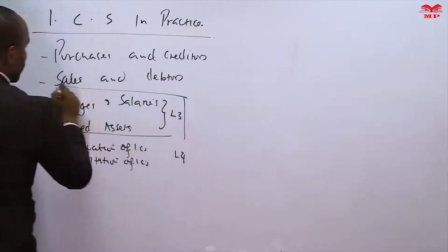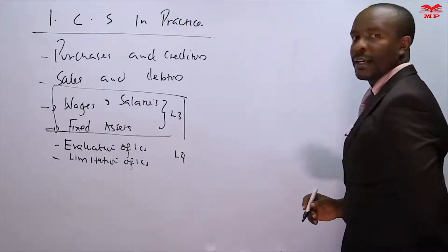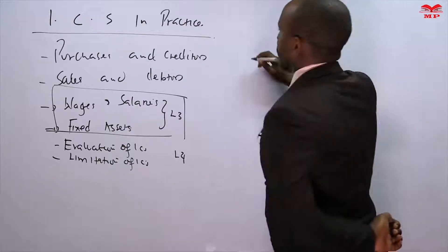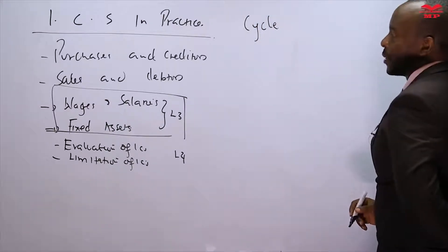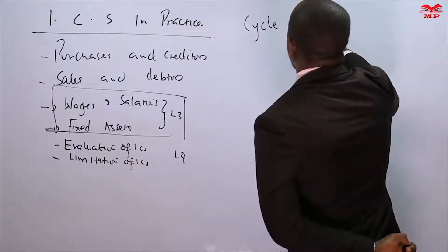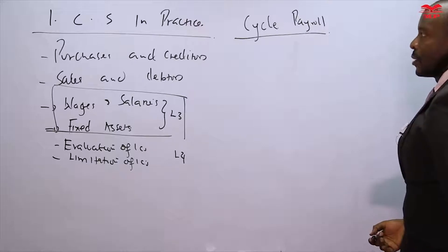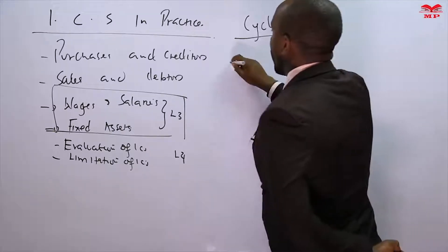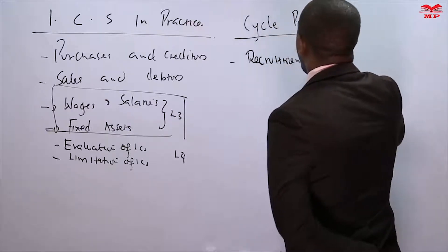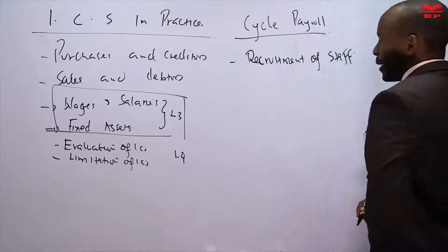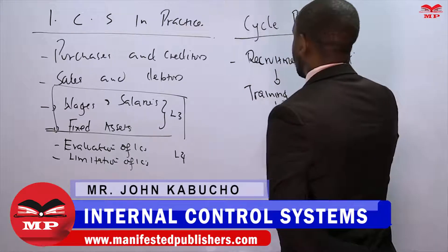For wages and salaries, just like we did for purchases and creditors, we start with what is called the payroll cycle. The cycle is a stream of activities involved in a particular environment. When making payments on salaries and wages, the main activities start with recruitment — the recruitment of company staff — followed by training.